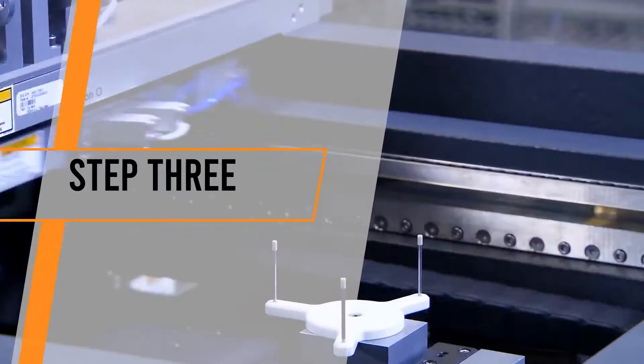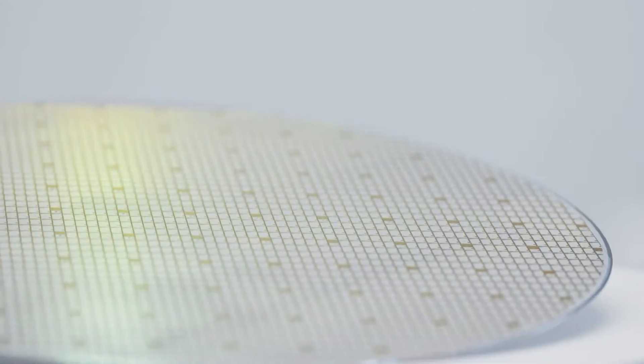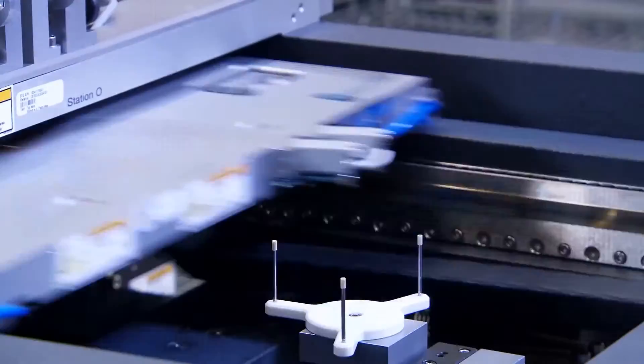Step 3. Photoresist coating. This is done before you print a layered chip. The wafer is first coated with a light sensitive layer called a photoresist, or resist for short. Then it enters the lithography machine.